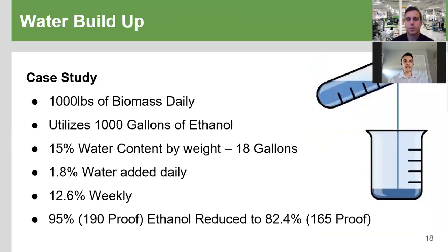Here's a basic numerical example: say you have a warm ethanol extraction or you're pressing and drying your plant material and getting basically 100% of the water out. Starting with 1,000 pounds of biomass daily, that's 18 gallons of water per day entering your process. Doesn't sound like a lot, but in a single week of running once per day, you've gone from 95% to 82% ethanol purity. We think of 85% as a lower cutoff — you want to stay above that for really efficient extraction. This problem will happen very fast and has to be dealt with if you want to close the loop.